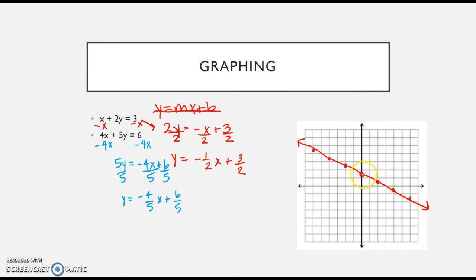I'm going to graph it right about there. My slope is negative 4/5, so I can go down 4 over 5, or up 4 back left 5.